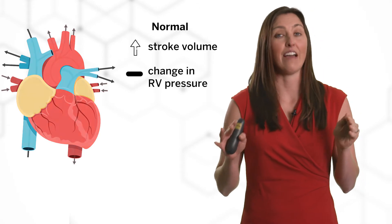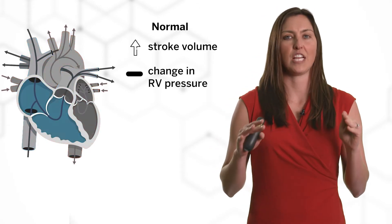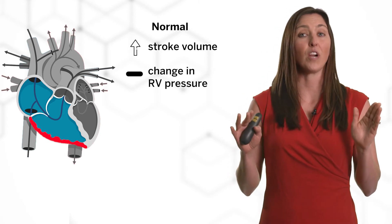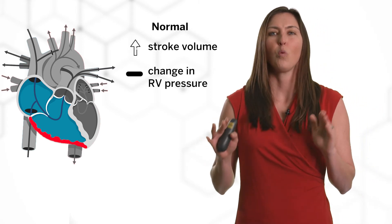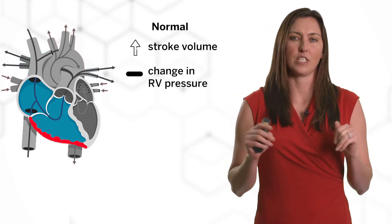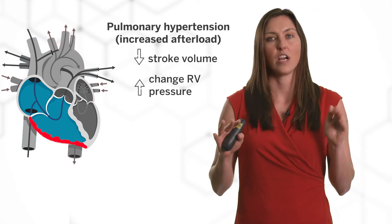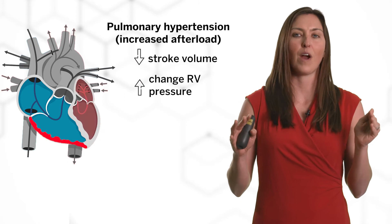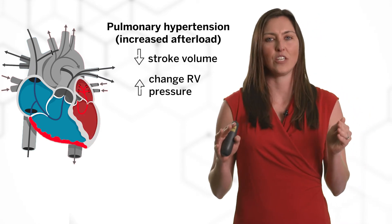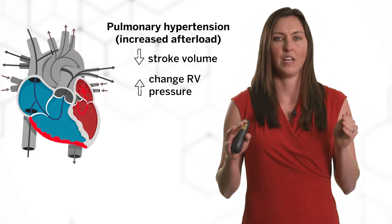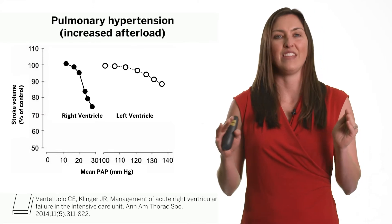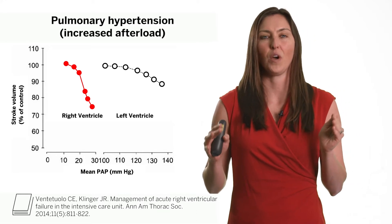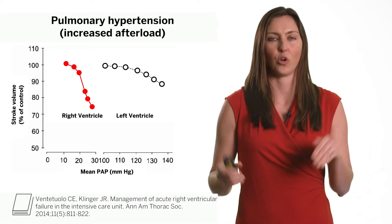In comparison to the left ventricle, the right ventricle is crescent-shaped with a thin free wall that allows a three- to four-fold increase in stroke volume without a significant increase in pressure. However, acute changes in afterload or pressure applied to the right ventricle are not handled as well as the left ventricle, and as seen in this figure, this causes a sharp decline in the stroke volume of the right ventricle in comparison to the left ventricle.